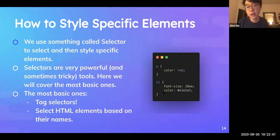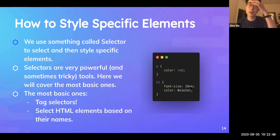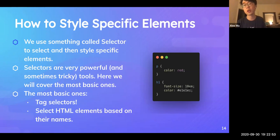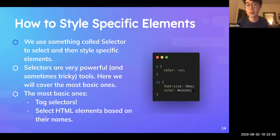For H1, the font size is set to 10em — we'll cover em and pixel later, but it's essentially a way to define how large text should be. And we define the color to a grayish color. This is the most basic use of HTML element selectors.